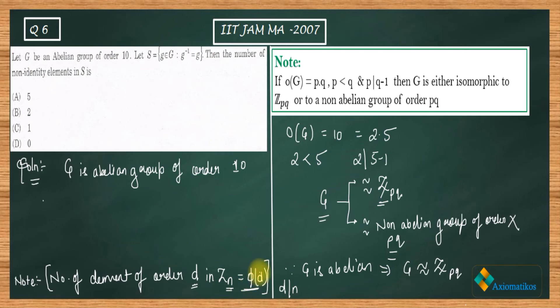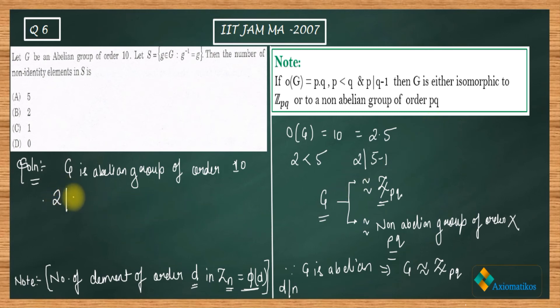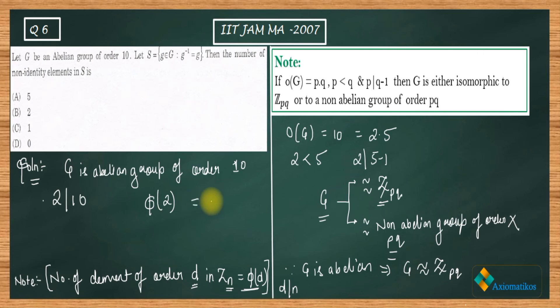You need to evaluate self-inverse elements. The meaning of self-inverse is simply that the order of that element is 2. So you need to calculate all elements of order 2. Since 2 divides 10, you can use this property: φ(2) gives the number of elements of order 2. Since φ(2) = 1, answer C is correct and all remaining answers are false.